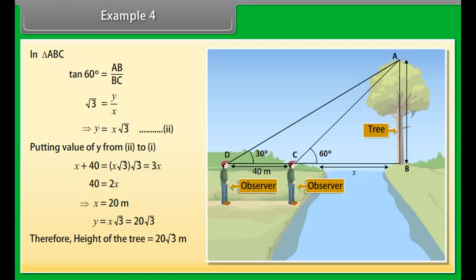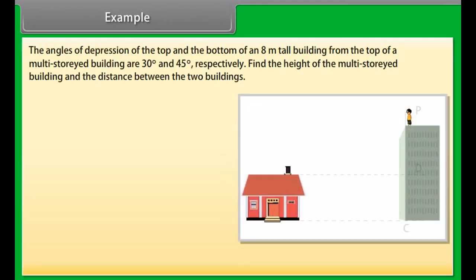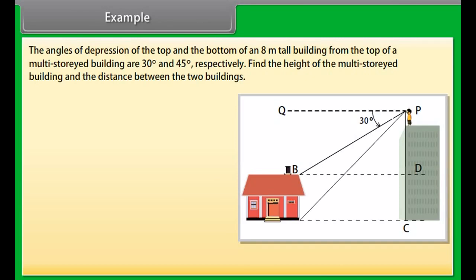Example 5: The angles of depression of the top and the bottom of an 8-meter tall building from the top of a multi-storied building are 30° and 45° respectively. Find the height of the multi-storied building and the distance between the two buildings.